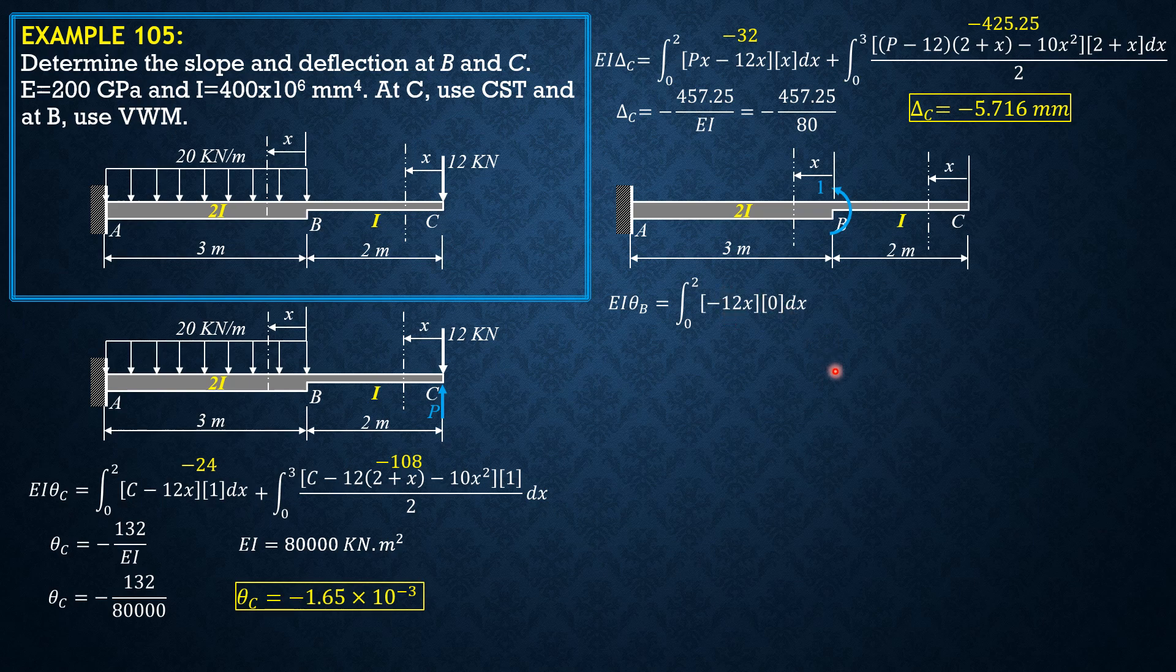There's no C here or there's no loading. Plus integral from 0 to 3 of negative 12 times 2 plus x minus 10x squared times 1 dx. So integrating using your calculator, this is 0 and this is negative 108.